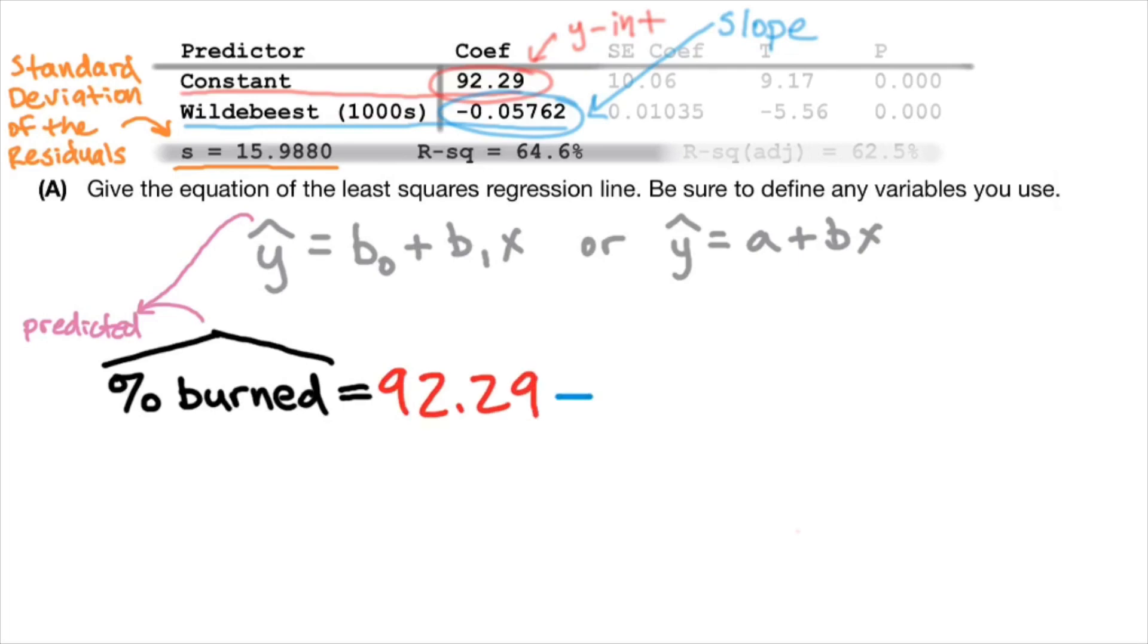Then we're going to have a minus. It's a minus because it's a negative slope. Next, let's write our slope. So 0.05762. We're going to multiply our slope times the x variable, which is Wildebeest. The question was so kind to remind us to define any variables that we use. So that's why we wrote percent burned and Wildebeest in the equation itself.